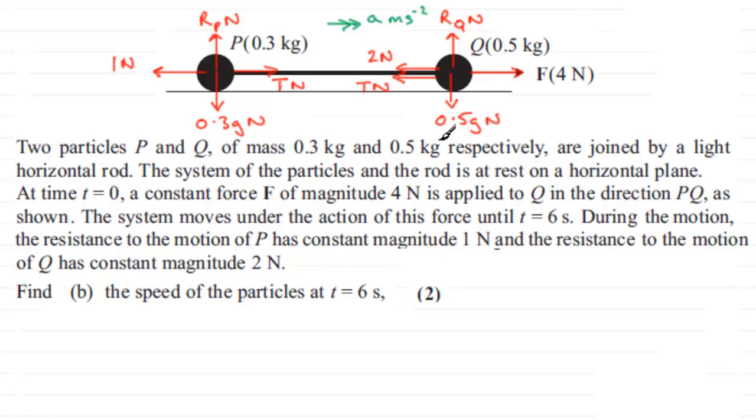And in the previous part, we were asked to calculate the acceleration, which we found out to be 1.25 metres per second per second. So how do we go about finding the speed then? Well, this is clearly a SUVAT-based problem.